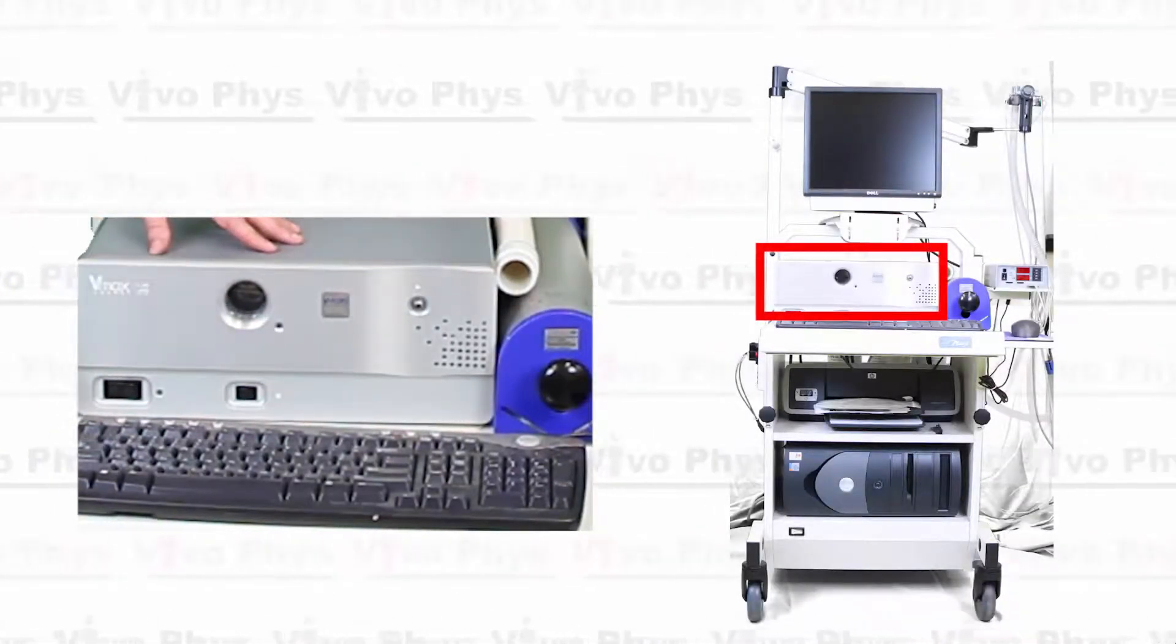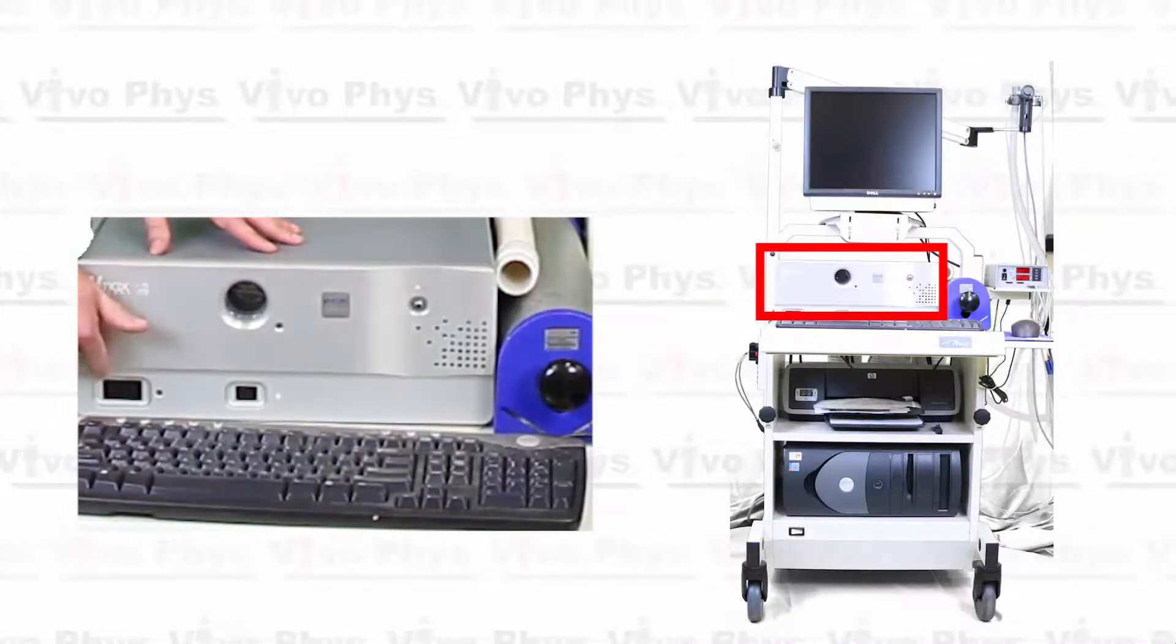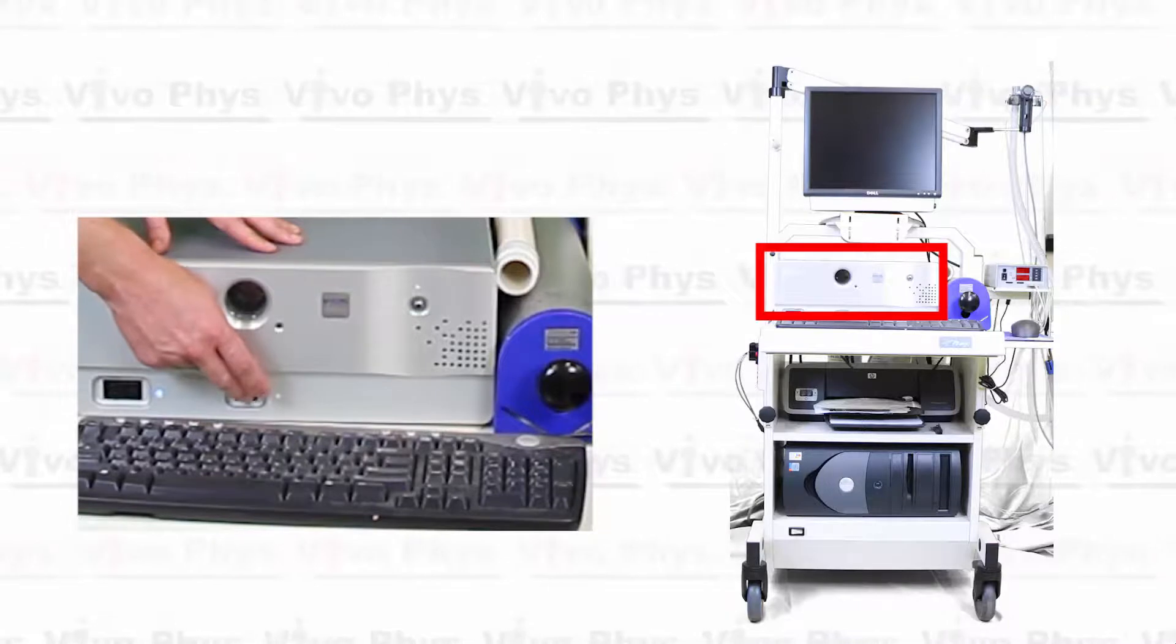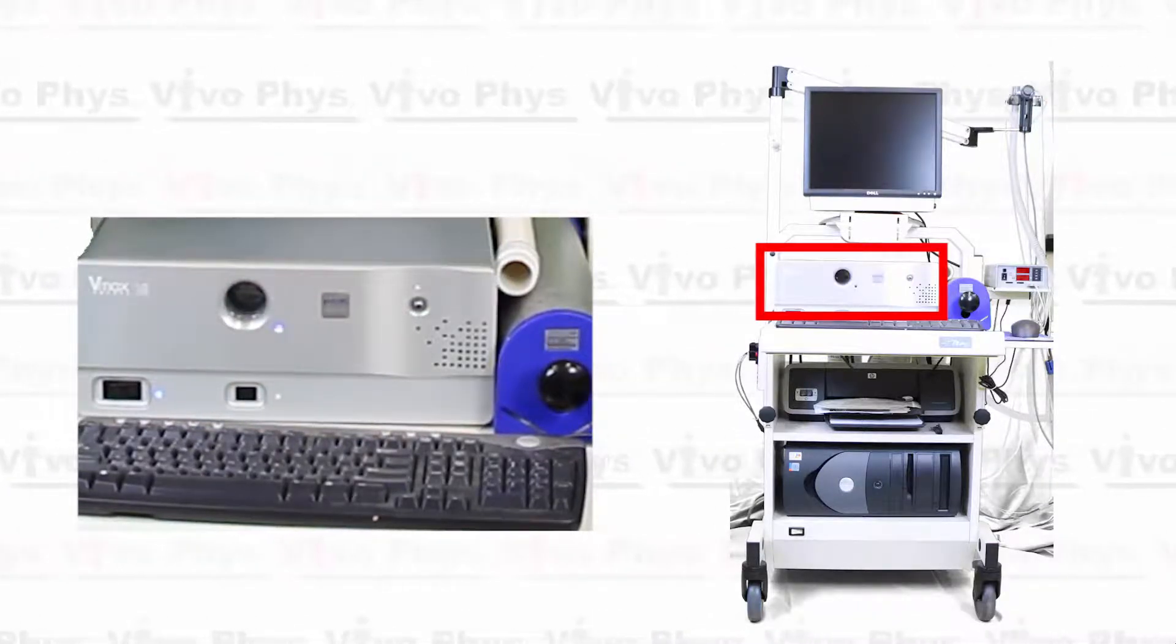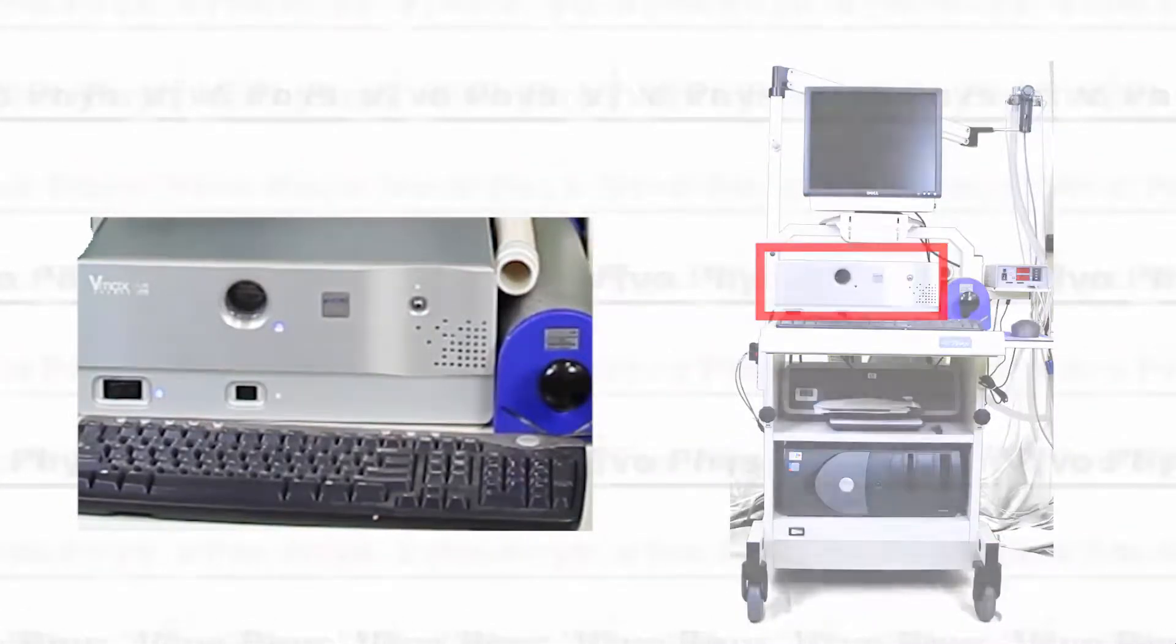So there's two switches here that we need to turn on. We'll go ahead and hit the first one first, so that's this power switch. And after that, we can turn on the fan itself, which is the second switch. Alright, so once these are on, we need to wait for at least 20 to 30 minutes before we actually try to calibrate the cart.